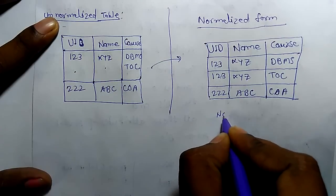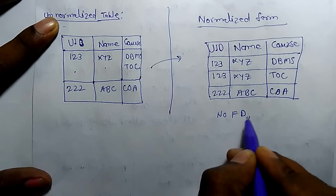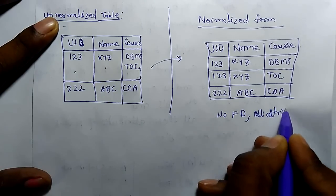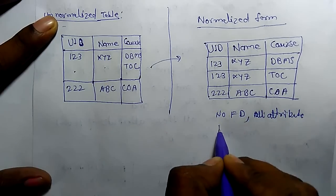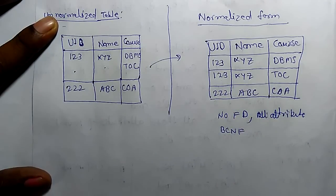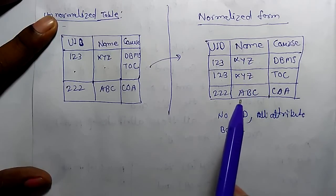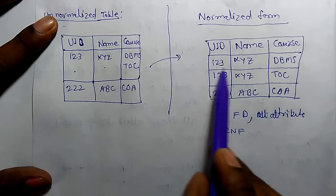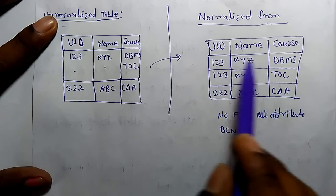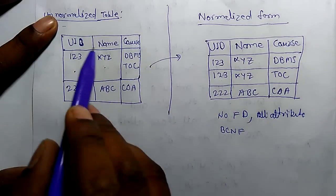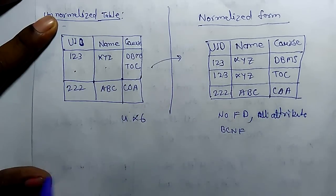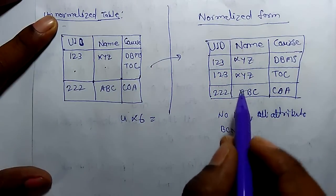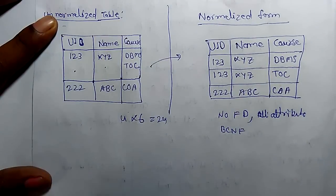In the last class we learned BCNF. For this table, if we assume there is no functional dependency and the key is all attributes, then this table will be in BCNF because all attributes are part of the key. But this design is not good because there is redundancy. For example, if a UID has 6 different courses, the total rows generated would be 24.